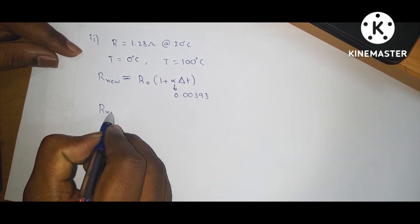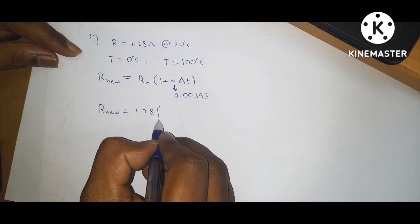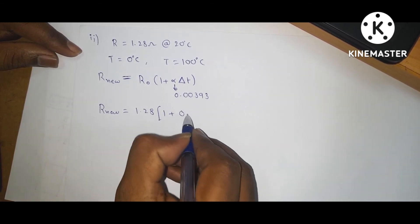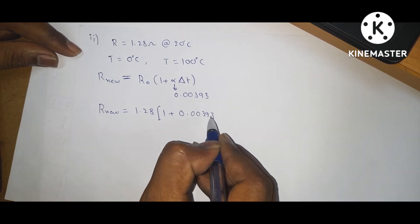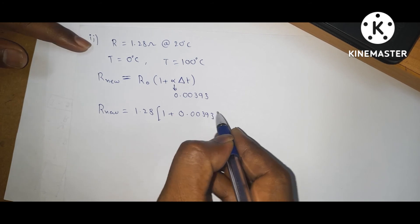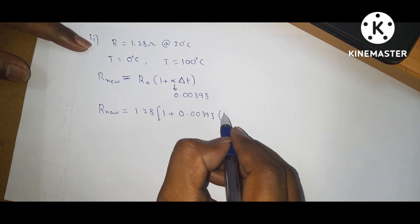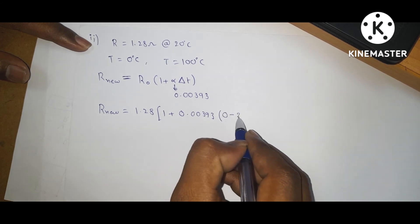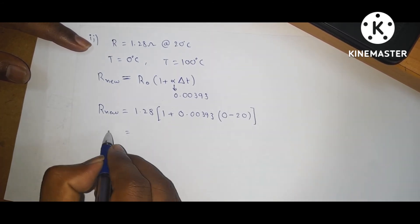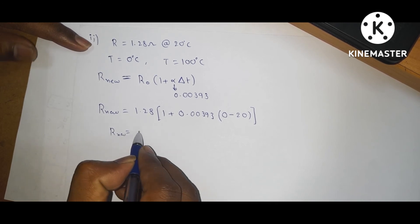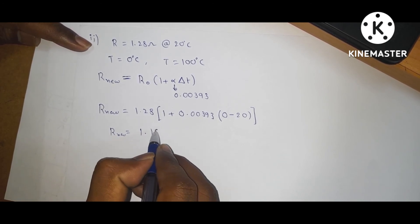Substituting the values: R_T is equal to 1.28 into 1 plus 0.00393 into (T1 minus T2). For 0 degree centigrade, T1 minus T2 is 0 minus 20. Solving this gives 1.18 ohms.